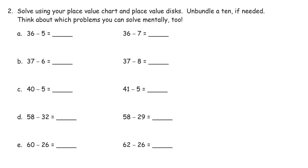So, 36 minus 5. I'm just going to do a few of them by example. Tens and ones — 36 minus 5. We need 3 tens and 6 ones. Take away 5 — there's your 5-group. The answer is 31. Didn't have to unbundle anything.